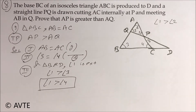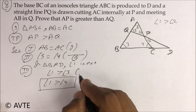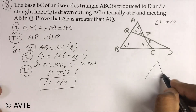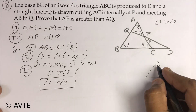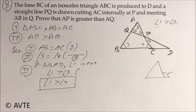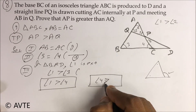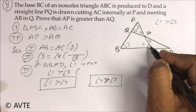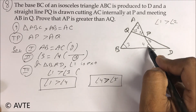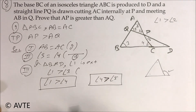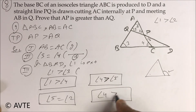So angle one is greater than angle four. This concept is: the exterior angle of a triangle is greater than either of the interior opposite angles. Similarly, angle four is greater than angle five — why? Same concept: exterior angle of triangle PCD. The exterior angle is greater than either of the interior opposite angles. So angle four is greater than angle five. But angle five is equal to angle two, so angle four is greater than angle two.